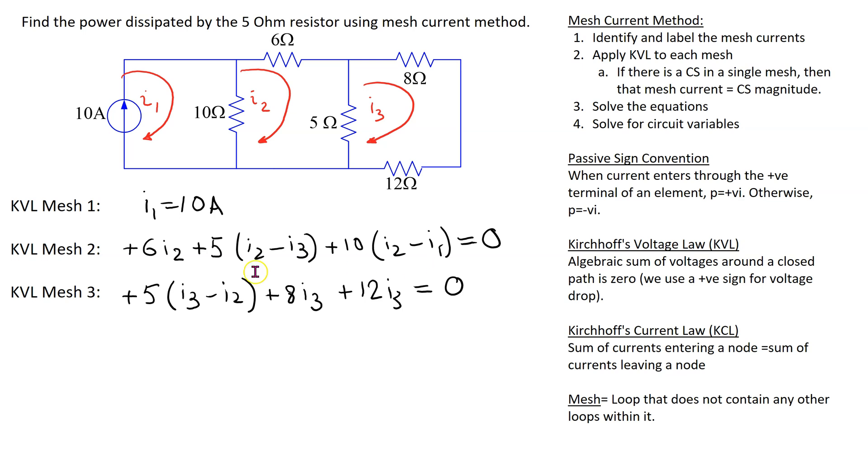So, we can see that in this case, although there are three meshes, because the current source is in the single mesh 1, then this reduces one equation and we can write one mesh current directly.